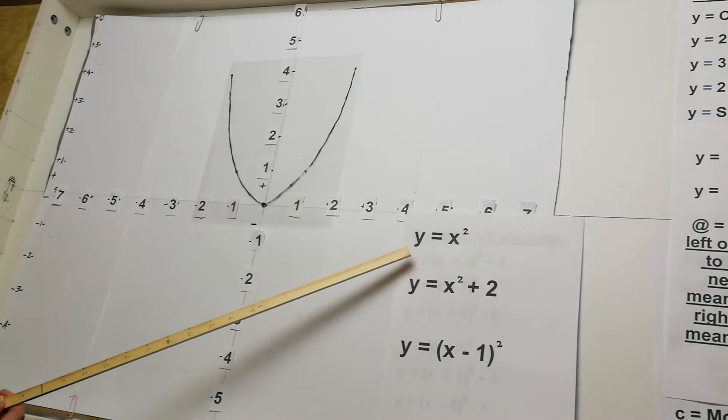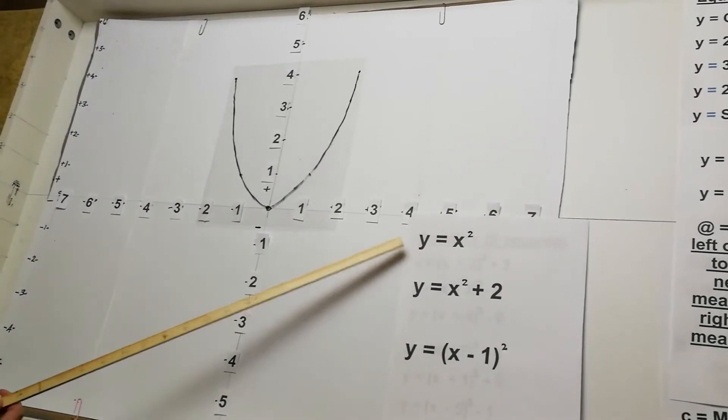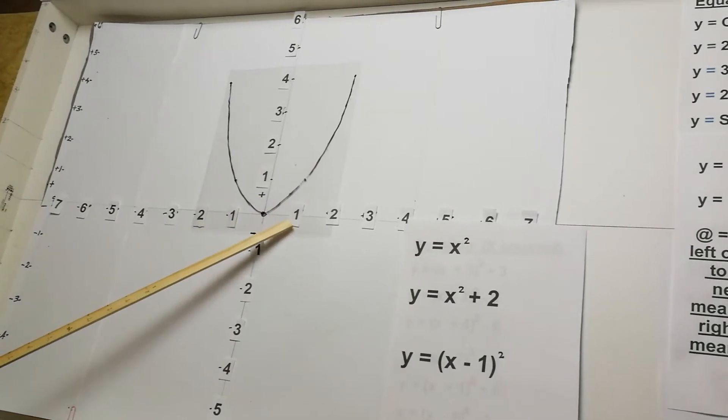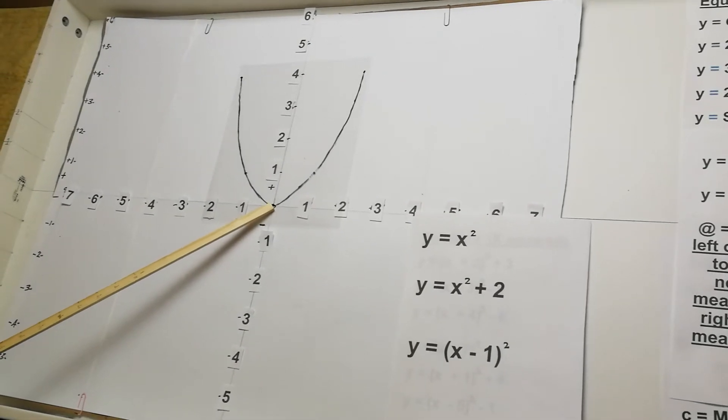Now, this is the equation of a basic parabola, y equals x squared. And basically all it means is, whatever x is, if you square that, you'll find the y value. So when x is 0, y is obviously 0.